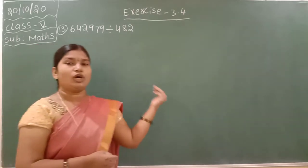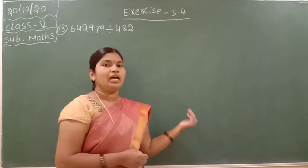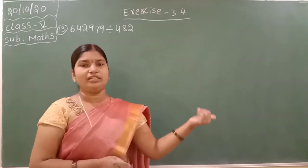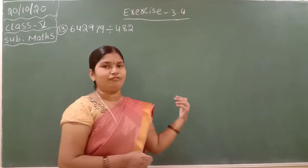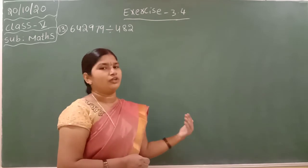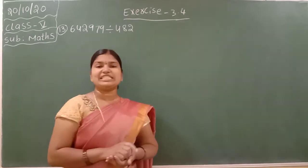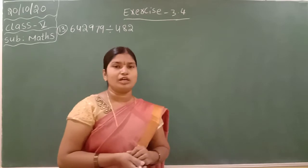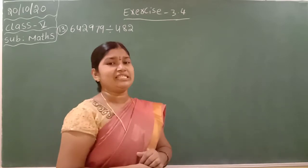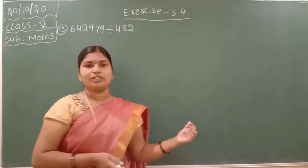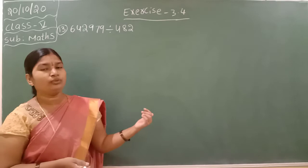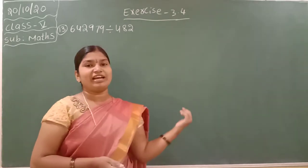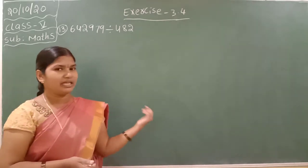First we have to do the normal division. After, we have to use the checking formula and we can verify if our answer is right or wrong. Now what is the checking formula? Tell me, children. The checking formula is: Dividend is equal to Quotient into Divisor plus Remainder.